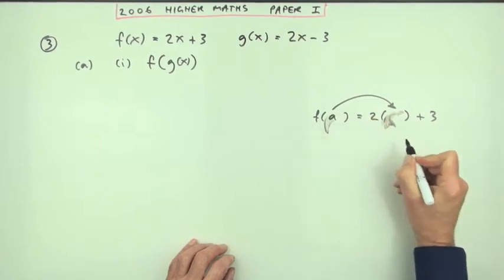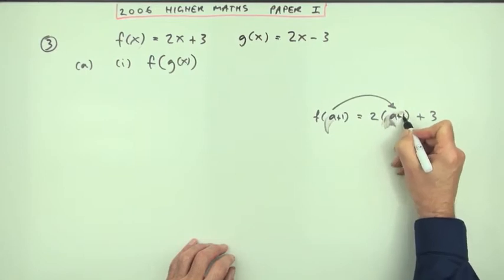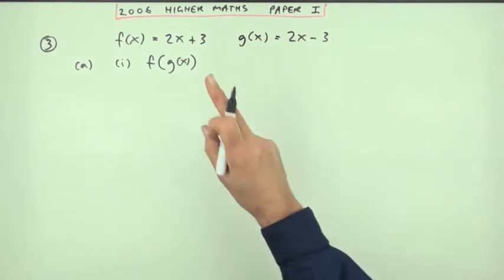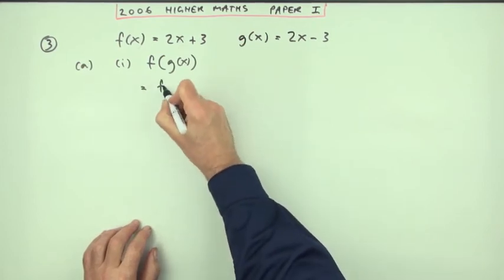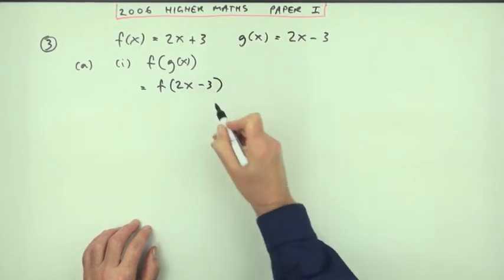Put in an x, that'll be 2x plus 3. Put in an a, it'll be 2a plus 3. Put in an expression, put in an a plus one, it'll be 2(a + 1) plus 3. So here the first mark is simply for saying, well if I put in a g of x, and g of x is this thing, I'll get the function acting on 2x minus 3.